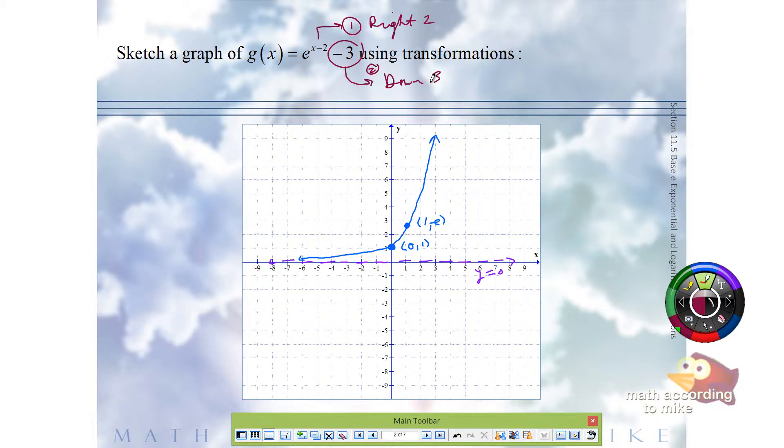So for each of our ordered pairs in blue, there's 0,1 and 1 comma e, we're going to move right 2 and then down 3. Let's do the easy one. So starting at 0,1, moving right 2, we're at 2,1, and down 3, we are at 2, negative 2. So right 2, down 3.